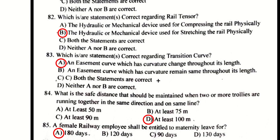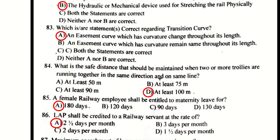Rail tensor refers to the hydraulic or mechanical devices which stretch the rail physically — option B. A transition curve is an easement curve which has curvature changing throughout its length — option A is the right answer.